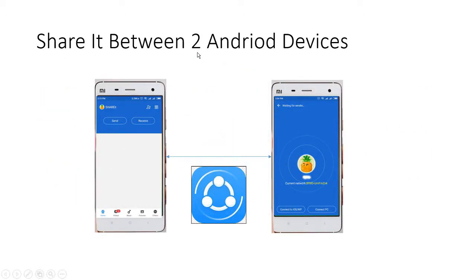Let's see how to share between two Android devices. If there are two Android devices, we just open ShareIt. When you open ShareIt, a hotspot will be auto-enabled — you can see the hotspot signal here, this is a Wi-Fi hotspot signal. It will auto-connect and simply transfer data between the two devices.